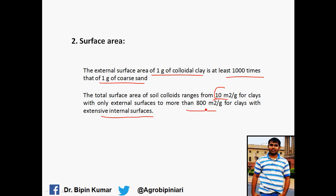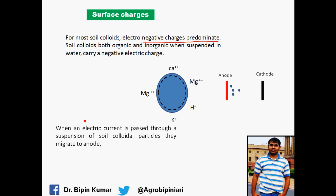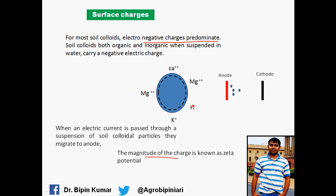This indicates how minute they are. Regarding surface charges, Soil Colloids have both negative and positive charges, but predominantly negative charges dominate. That is why they carry negative electrical charges. We can visualize this when we pass electric current through a suspension of Soil Colloids — the colloids move towards the anode, indicating predominance of negative charges. The magnitude of these charges is known as zeta potential.